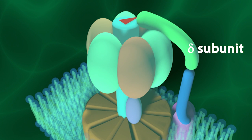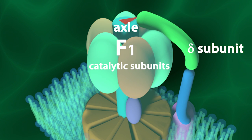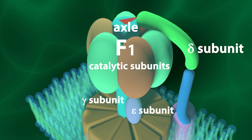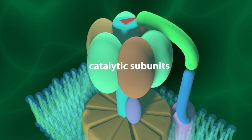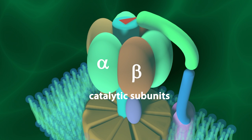The F1 part, or lollipop, is located in the matrix and serves as the axle and catalytic parts of the ATP synthase. The axle is often referred to as the stick, while the catalytic subunits are often referred to as the candy portion of the lollipop. The axle is comprised of one gamma and one epsilon subunit, which are connected to the C subunits, or rotor-like motor, and extend up into the catalytic part, which is comprised of three alpha and three beta subunits. The delta subunit has no catalytic activity.